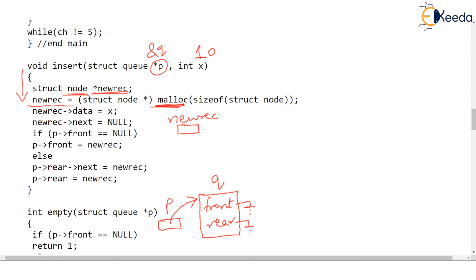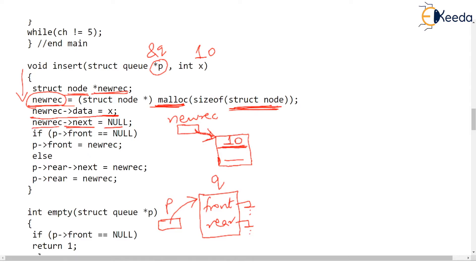malloc will allocate a new node because we asked for sizeof struct node. Somewhere in memory a new node is created or allocated, and new_rec will point to this new node. Every node stores two things: data and next. The next line sets new_rec arrow data to 10 (because X is assigned). Then new_rec arrow next is set to null — and indeed it should be, because there was nobody in the queue at this moment.